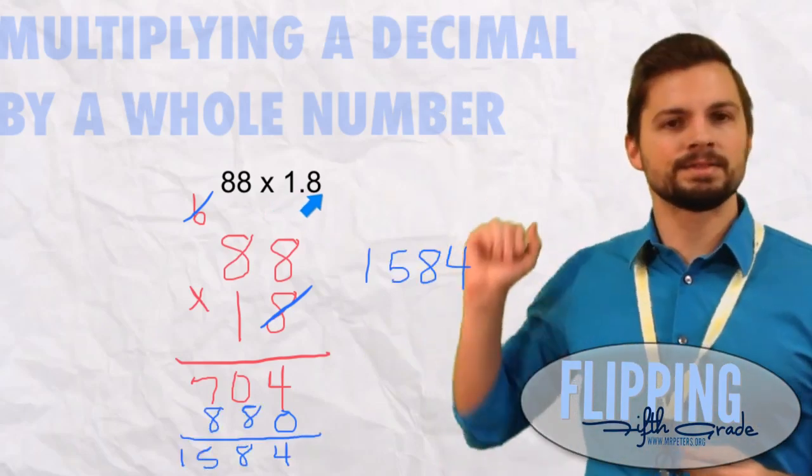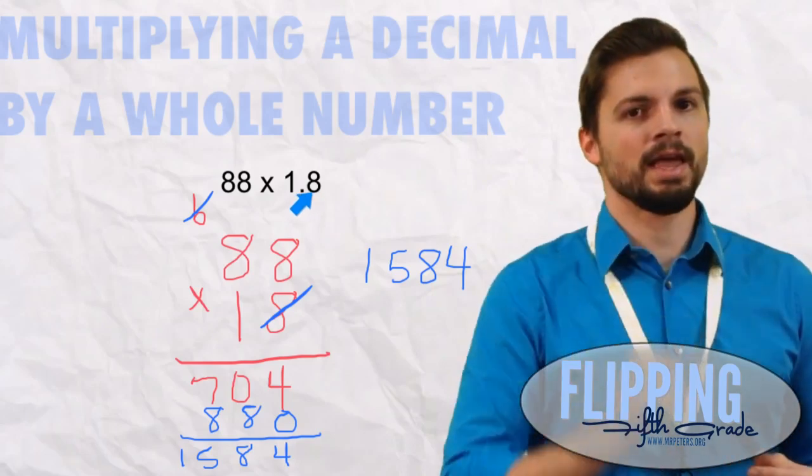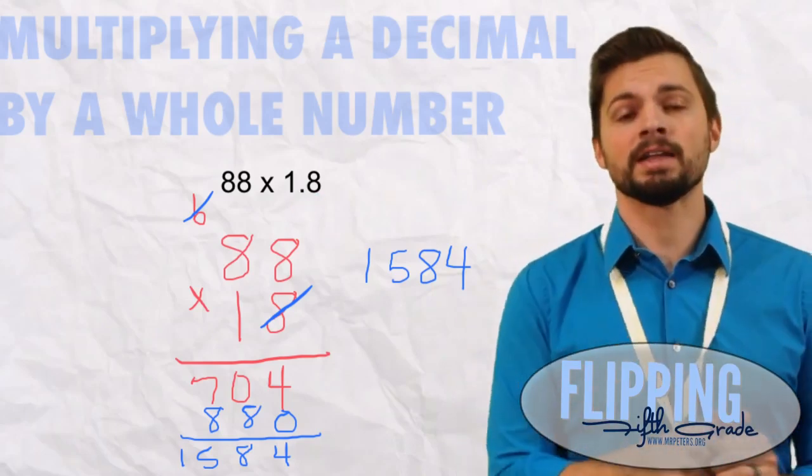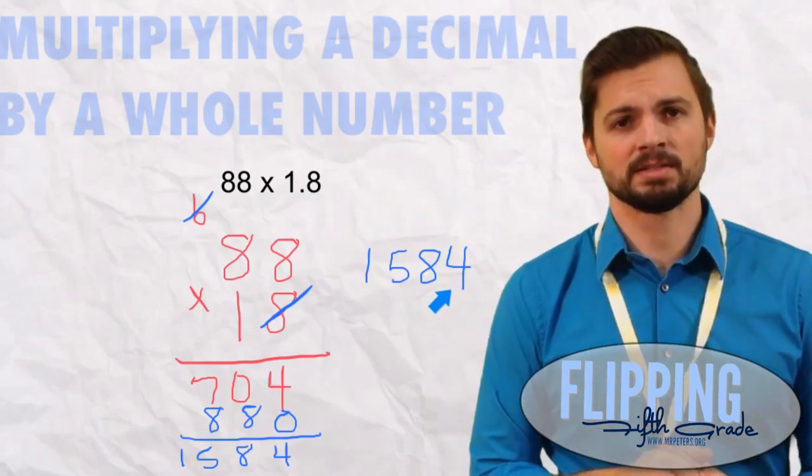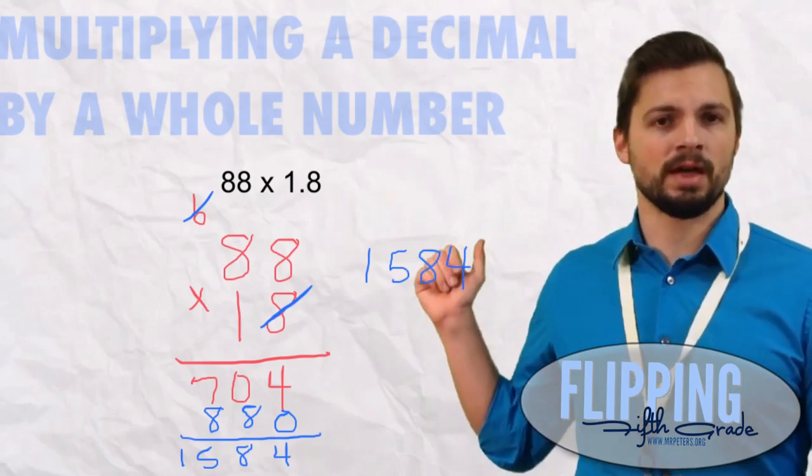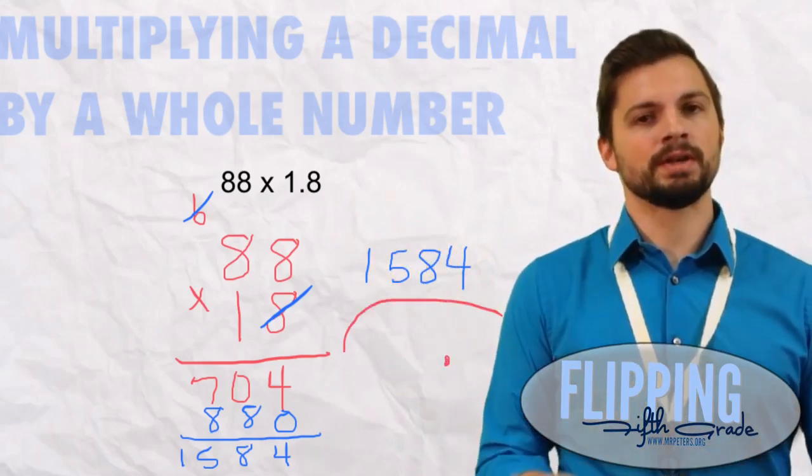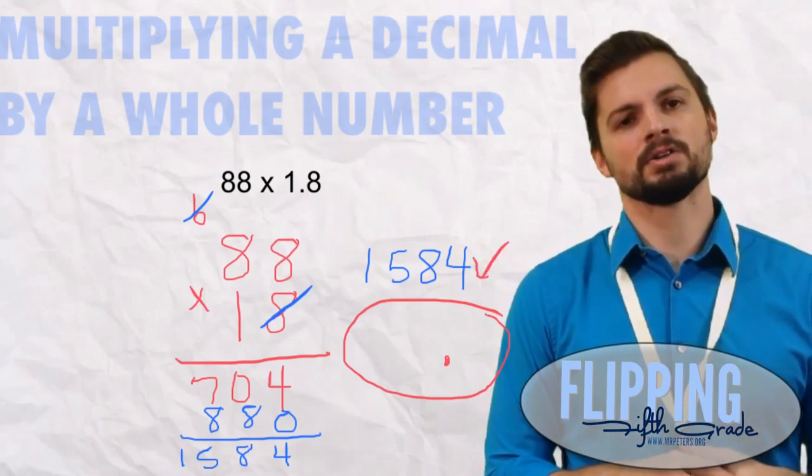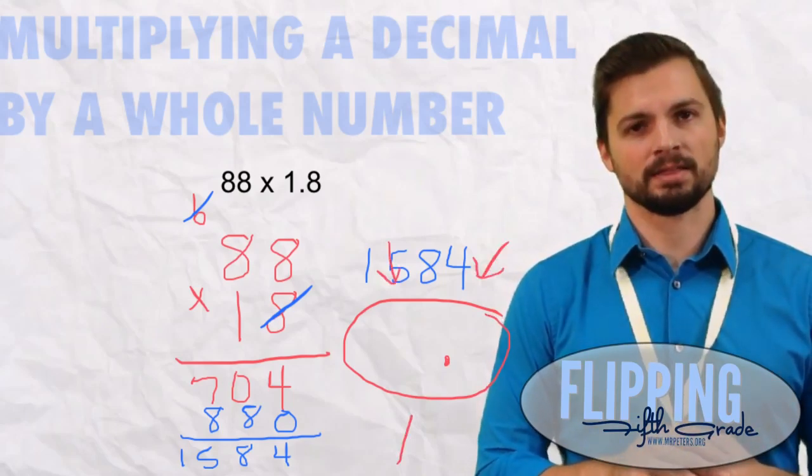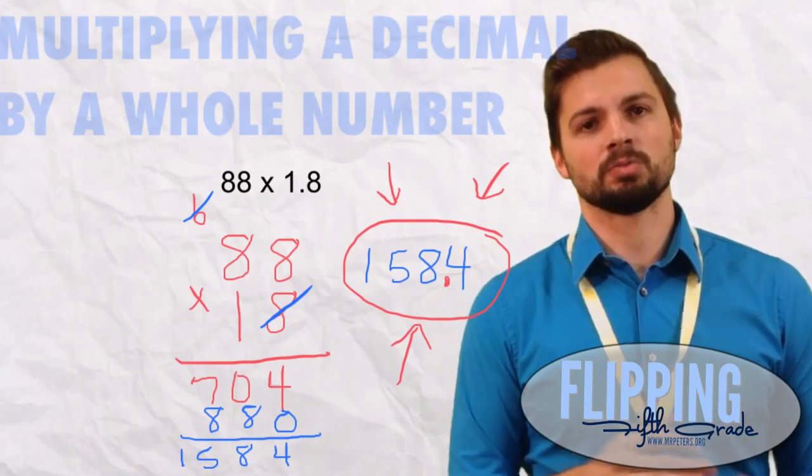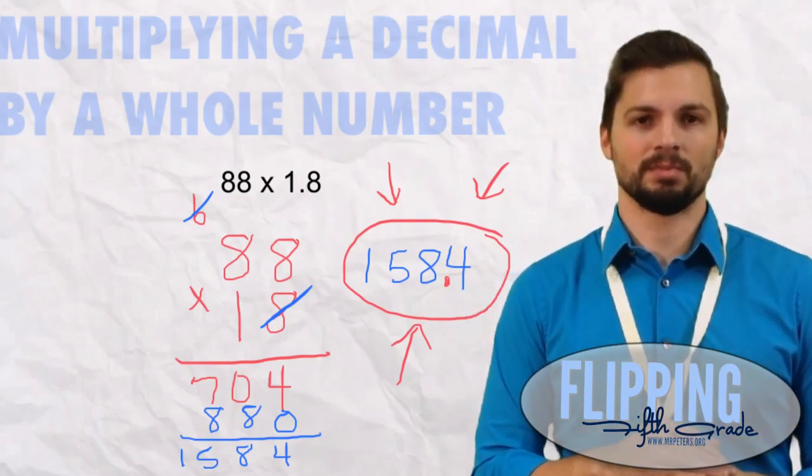There is none in the top number but there is one 8 behind the decimal. Therefore our answer must have one digit behind the decimal. We start to the right, move left 1 and put it between that 8 and 4. So now our actual product is 158.4 and that's the simple way to multiply decimals by a whole number.